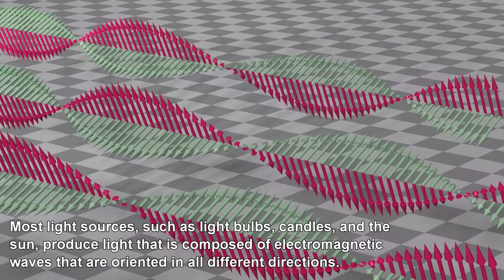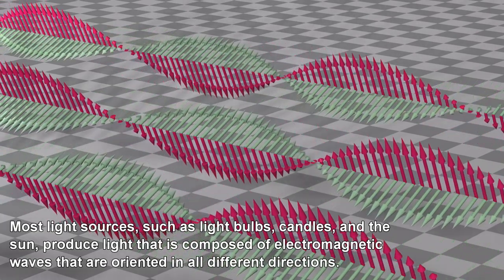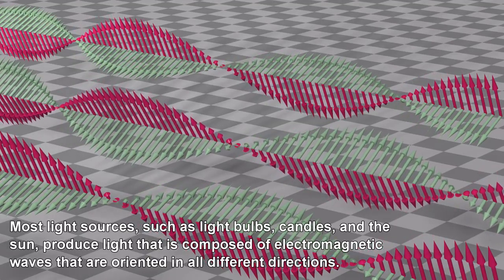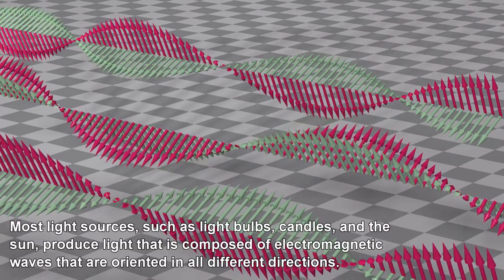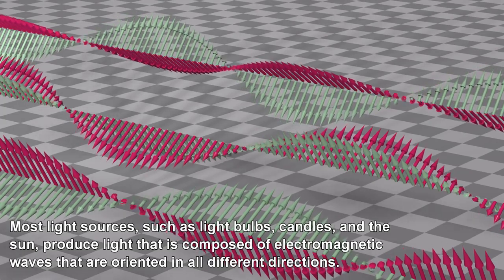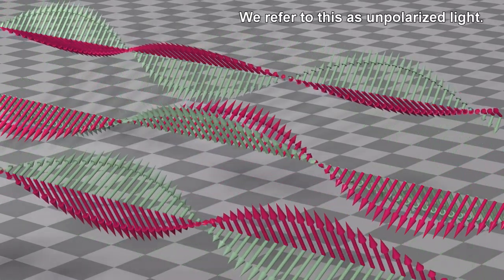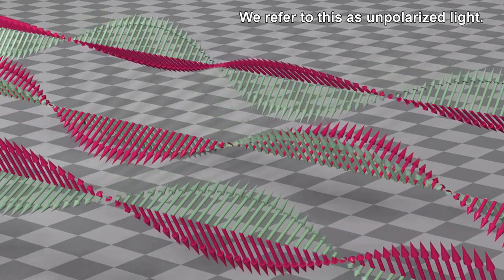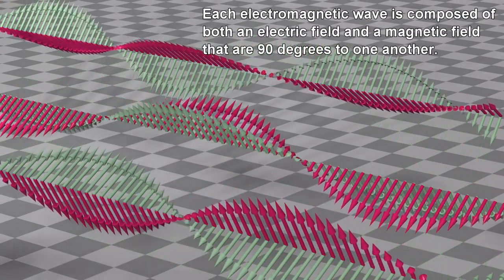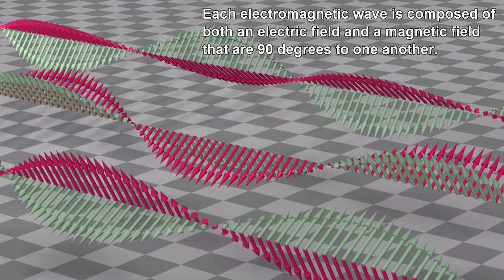Most light sources, such as light bulbs, candles, and the sun, produce light that is composed of electromagnetic waves that are all oriented in different directions. We refer to this as unpolarized light. Each electromagnetic wave is composed of both an electric field and a magnetic field that are 90 degrees to one another.